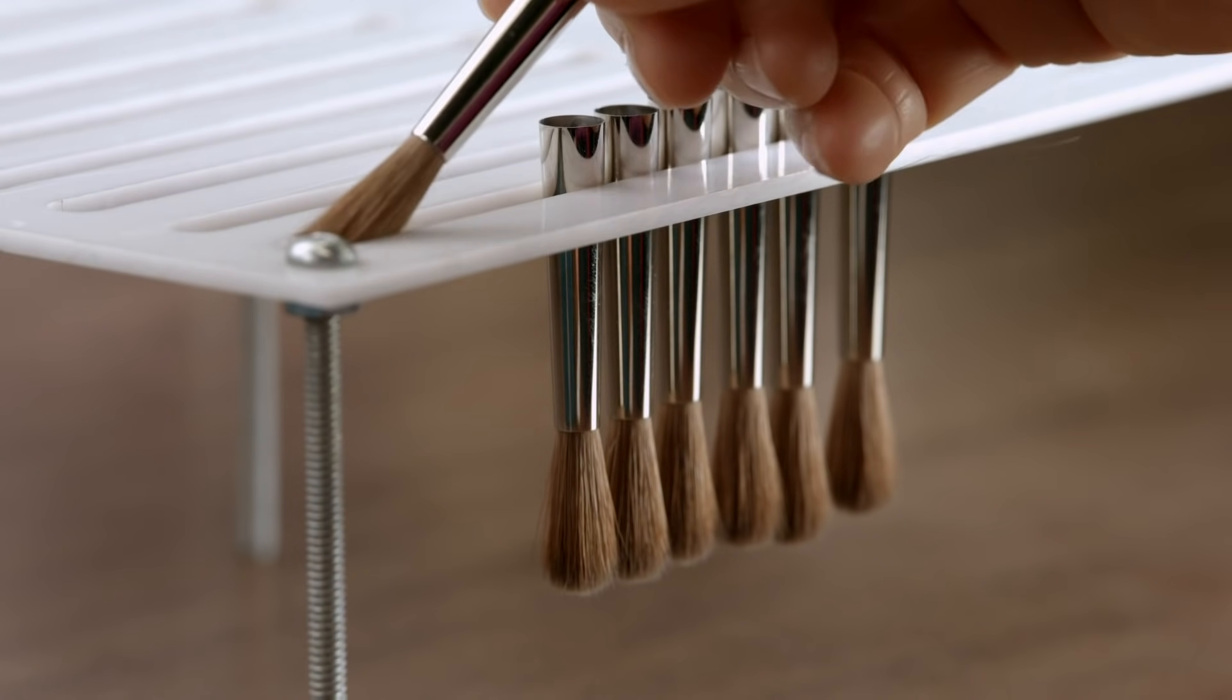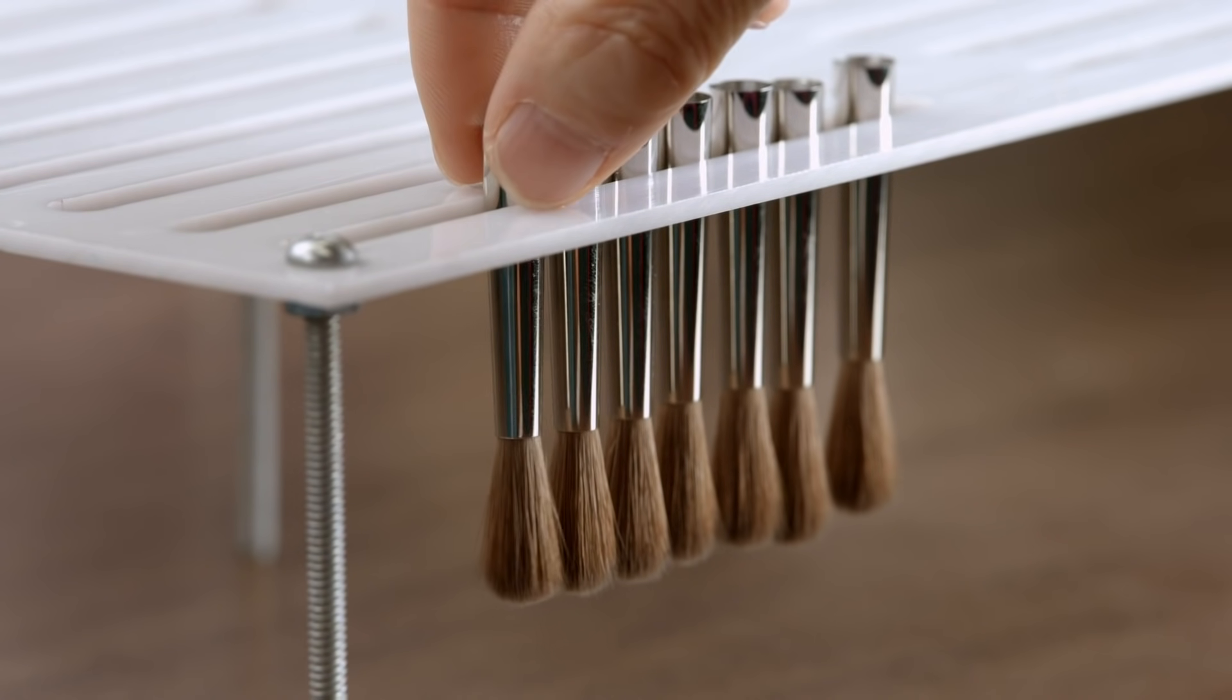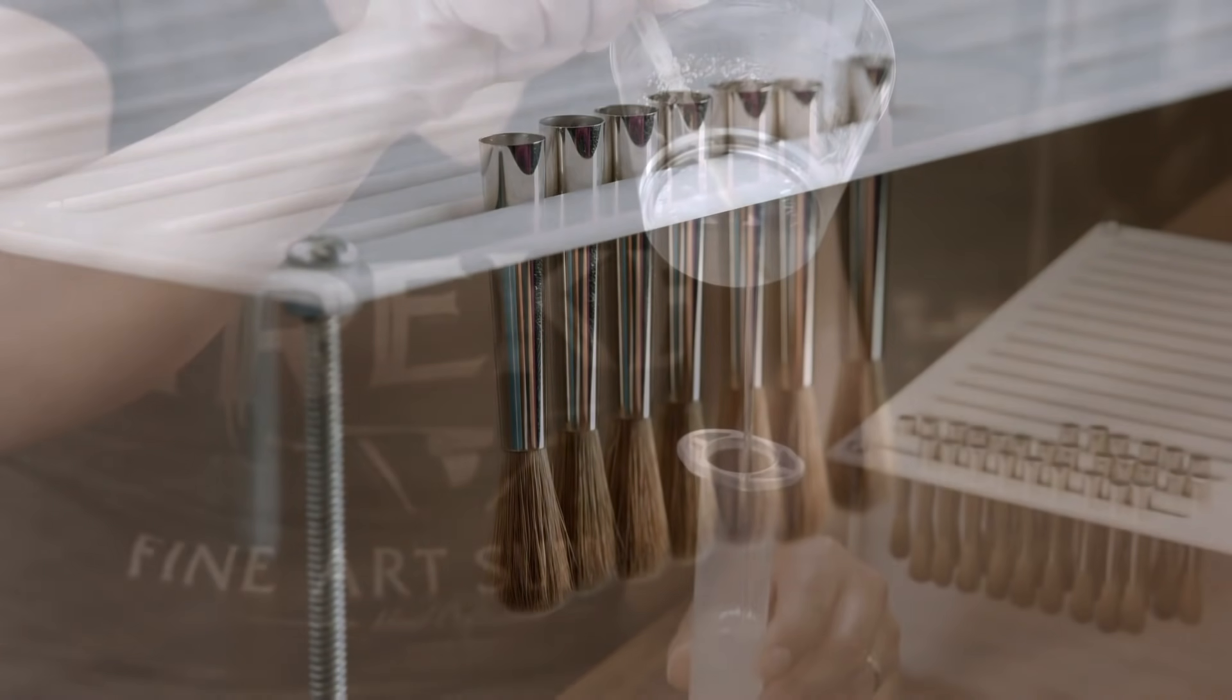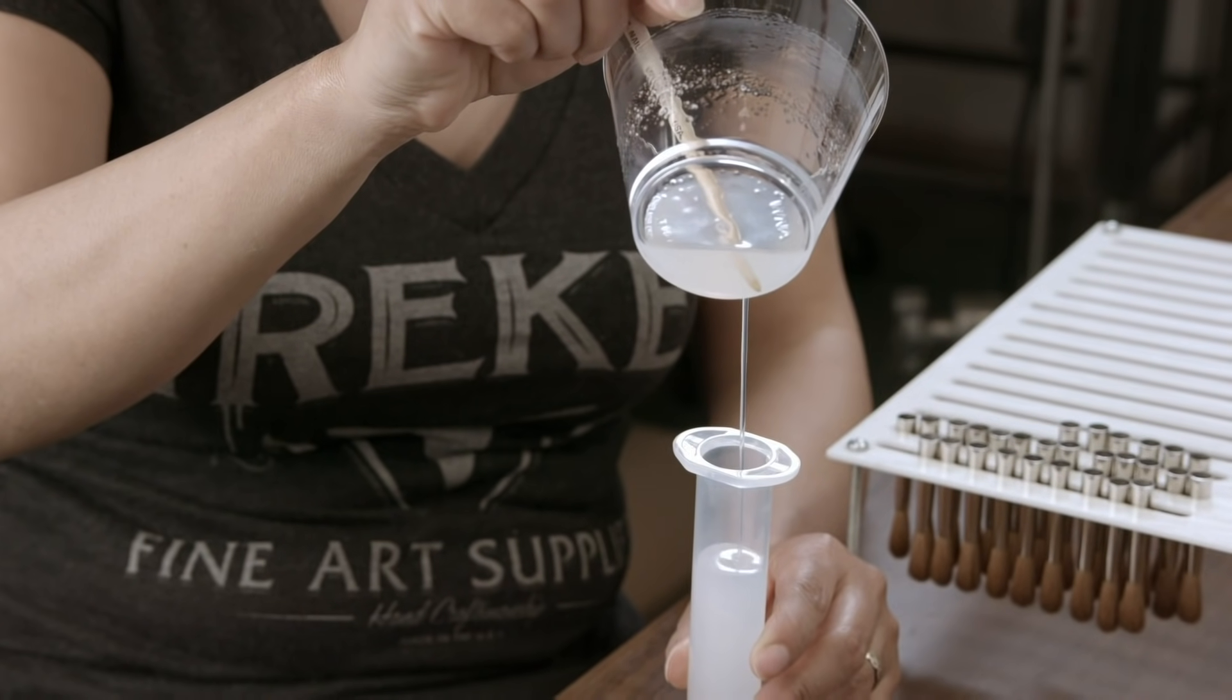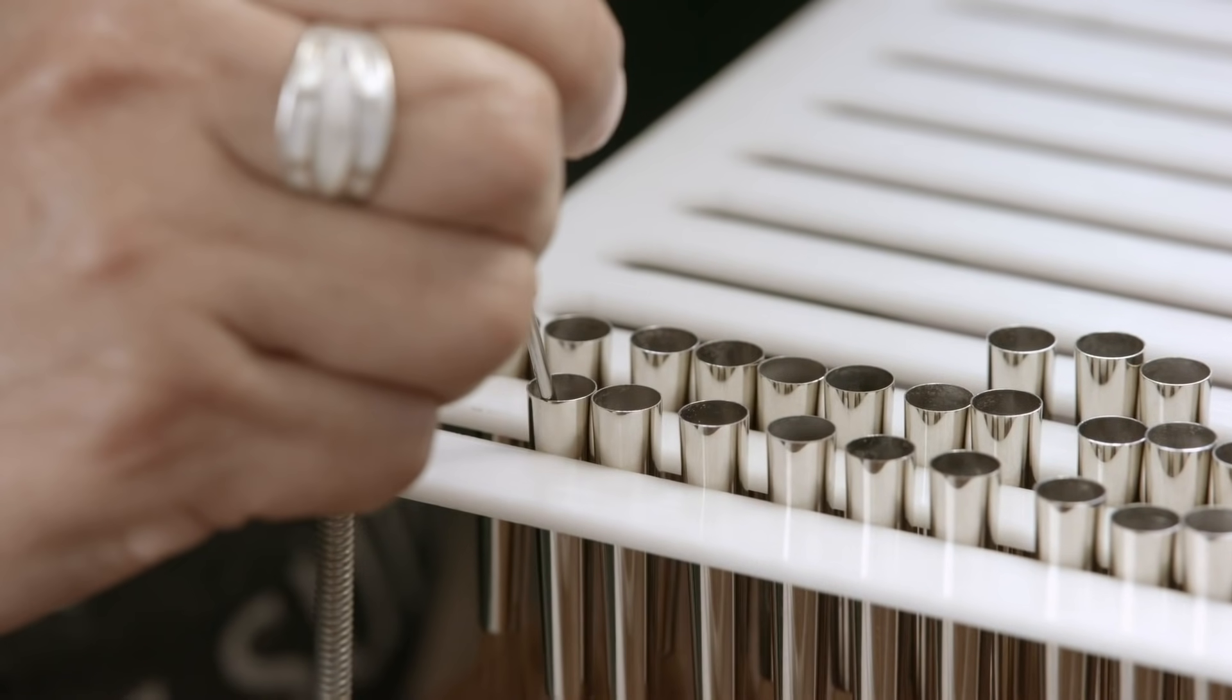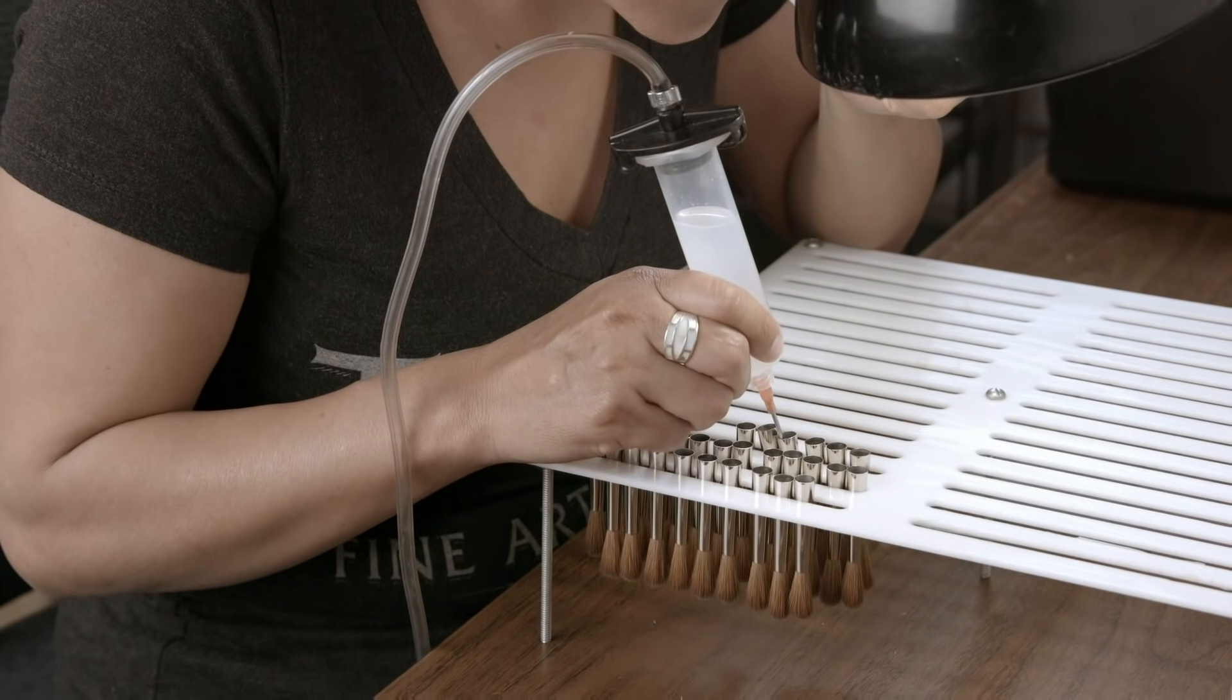The assembled brush head is then placed in a rack for the next stage. Here, a syringe is filled with epoxy glue, which is then used to fill the ferrule with enough glue to submerge the hairs.